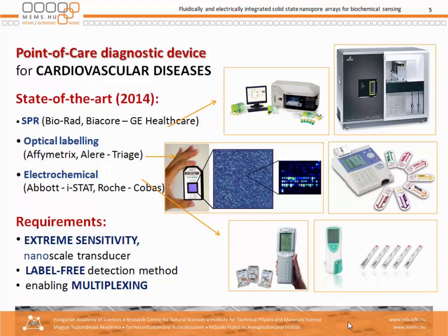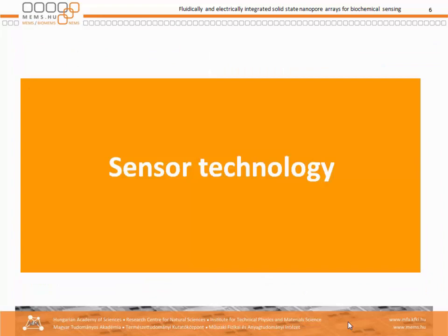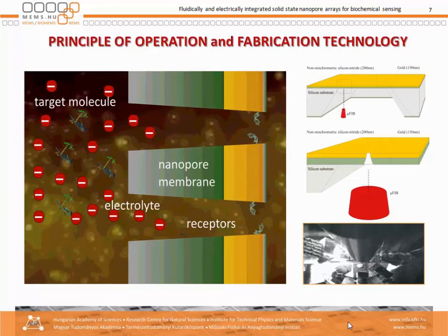However, existing devices use either surface plasmon resonance, optical labeling, or electrochemical solutions. What we are going to use is a label-free method, which is actually one of the requirements for being a platform, with extreme sensitivity — equal to nanoscale transducers — and we would like to enable multiplexing as well.